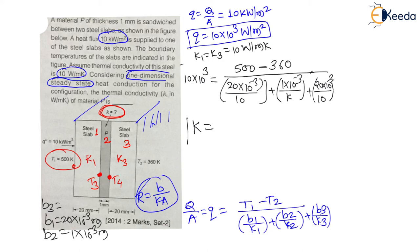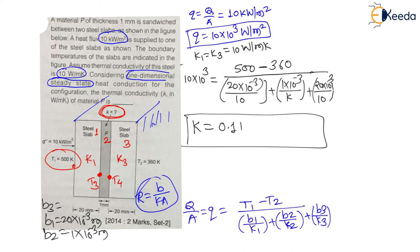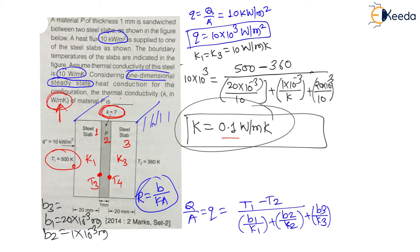Solving this equation using simple algebra, we get k = 0.1 watt per meter kelvin. Since this is a fill-in-the-blanks question asking for the answer in watt per meter kelvin, you have to type 0.1. Thank you dear students — in the next lecture we will see one more numerical on this topic from a previous year GATE examination.